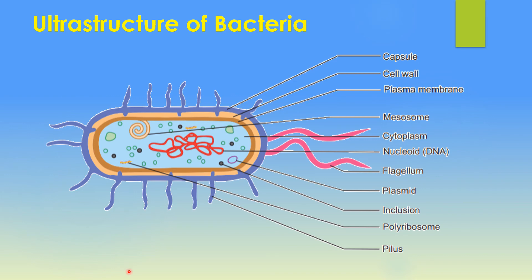This is the ultrastructure of the bacteria. The first part is the cell wall, and within the cell wall the plasma membrane is present. The region within the plasma membrane is referred to as the cytoplasm. The cytoplasm contains various organelles like ribosomes, polysomes, nucleoids and DNA, plasmids, and inclusion bodies. The plasma membrane also contains a folded structure called the mesosomes. The surface of the bacterial cell contains three surface appendages: flagellum, fimbriae, and pilus. Some bacterial cells are surrounded by a layer called the capsule.